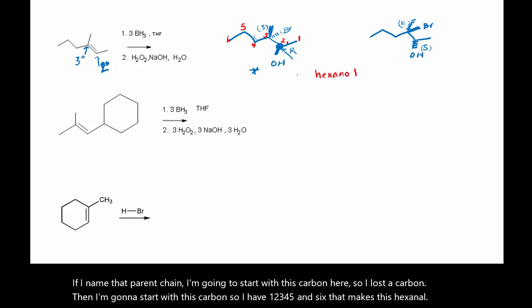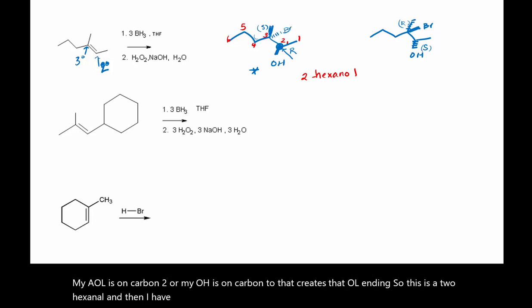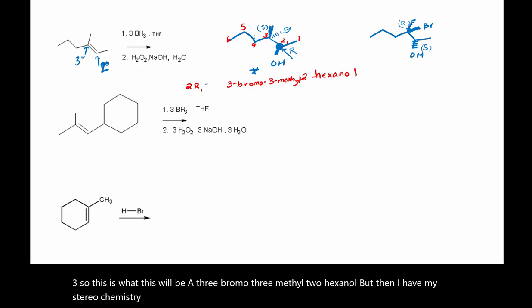My OH is on carbon two, which creates that -ol ending. So this is a 2-hexanol. And then I have two substituents: I have a methyl and a bromo, and they're both on carbon three. So this will be 3-bromo-3-methyl-2-hexanol, but then I have my stereochemistry. So it would be 2R,3S-3-bromo-3-methyl-2-hexanol.